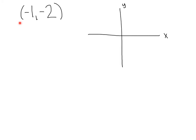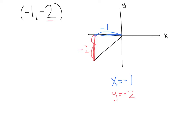Let's do another example. Here we've got the point (-1, -2). We start by going negative 1 on the x-axis — so x equals negative 1. My y value is going to be down negative 2, so y equals negative 2. To find my distance, I draw my right triangle. Theta always goes on the inside. If I do my Pythagorean theorem, I get r equals the square root of 5.